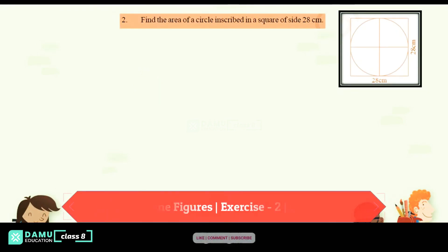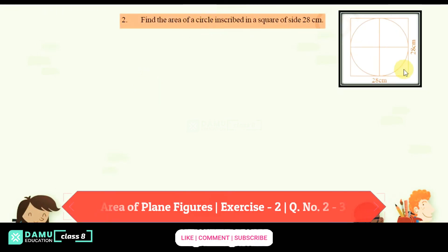In this second question, we have to find the area of a circle inscribed in a square of side 28 cm. This square is 28 cm by 28 cm, and the circle's diameter is given indirectly by the square. So the diameter will be equal to 28 cm.